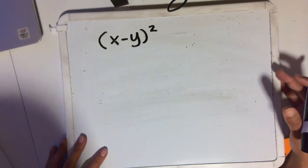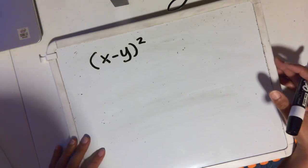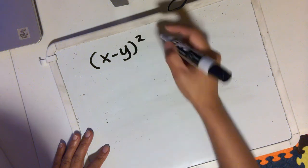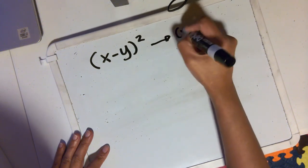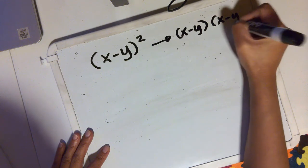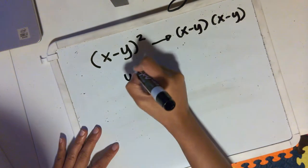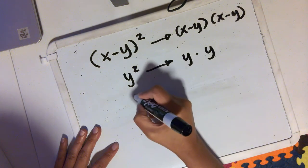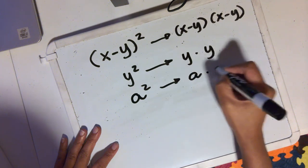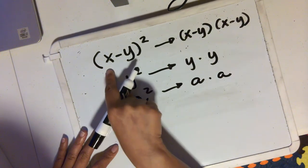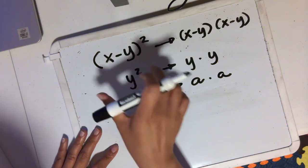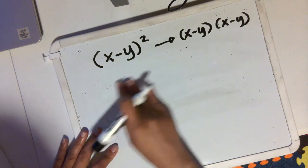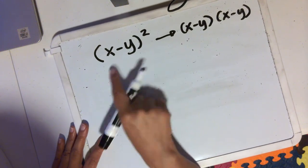Hello everyone, in this video I'm going to show you how to square a binomial. For example, if you have x minus y quantity squared, what does that mean? This actually means x minus y times x minus y. It's the same as y squared meaning y times y, or a squared meaning a times a. Therefore, if you have x minus y quantity squared, that means x minus y times x minus y. So let's find out what the square of a binomial is.